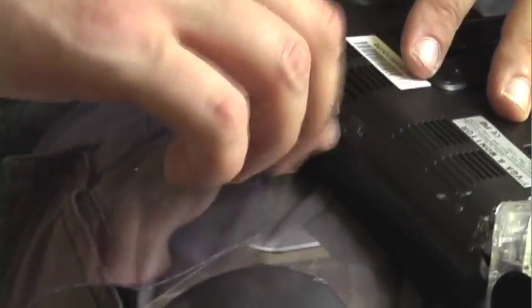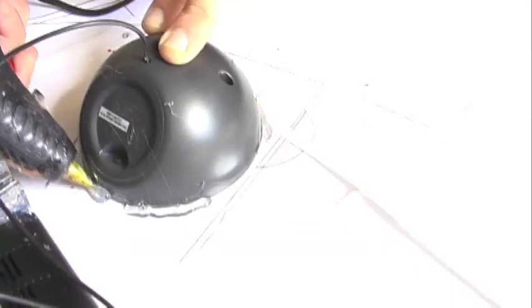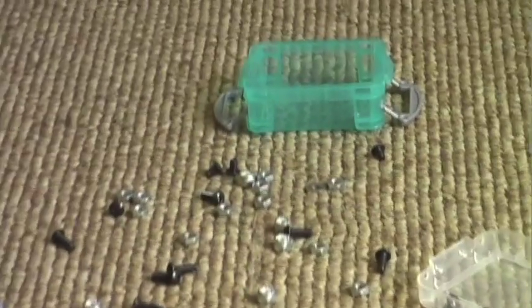Now you can bolt the monitor webcam combo to the plastic with your hardware. Center each speaker in place and run a bead of hot glue around each one as well. Now you can begin to partially assemble the shell with the 10-32 hardware.